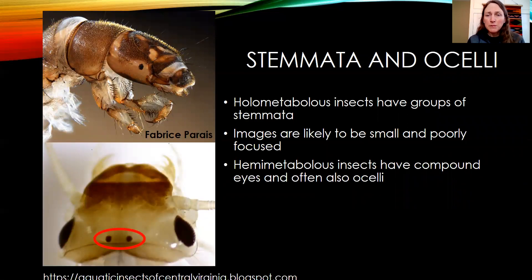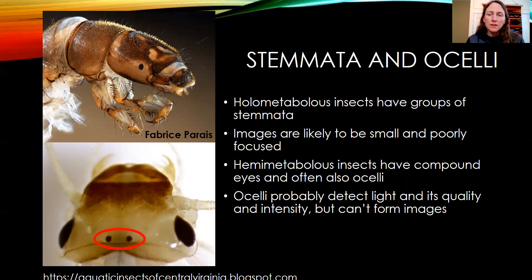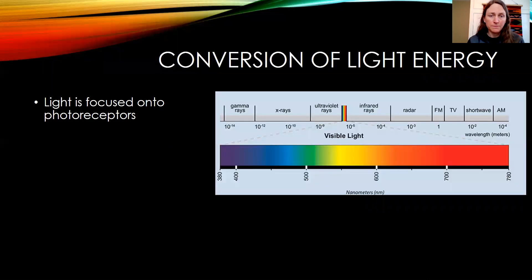A hemimetabolous insect has compound eyes and often ocelli, and here you can see two really prominently. The ocelli probably detect light and its quality and intensity, but they can't form images — the compound eyes can.